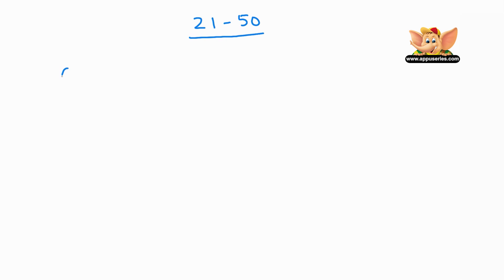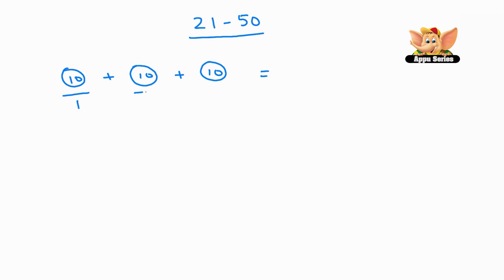What is circle plus circle plus circle equal to? We know this is one 10, this is another 10, and this is another 10. So we know there are three 10s, and that equals 30.